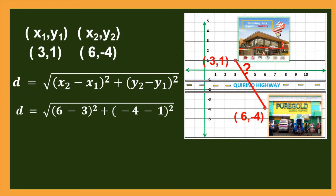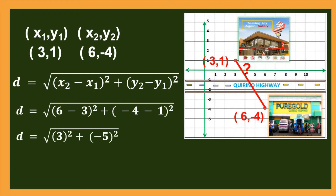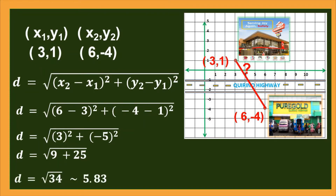That will be: D is equal to the square root of the square of the quantity (6 minus 3), plus the square of the quantity (negative 4 minus 1). Simplify: that is the square root of 3 squared plus the square of negative 5. Then find the square of 3 and the square of negative 5. That gives D equals the square root of 9 plus 25. Simplify 9 plus 25, which equals the square root of 34.